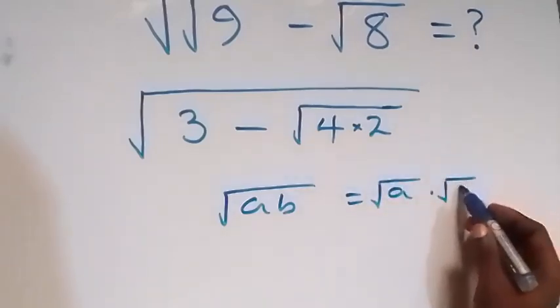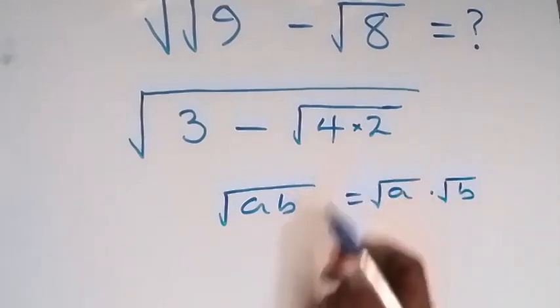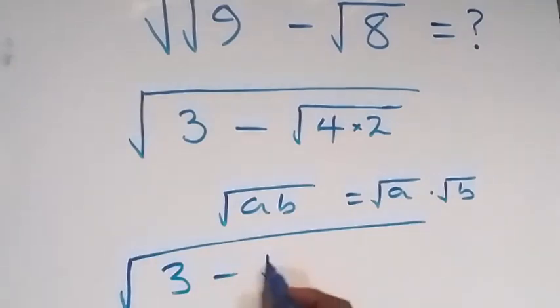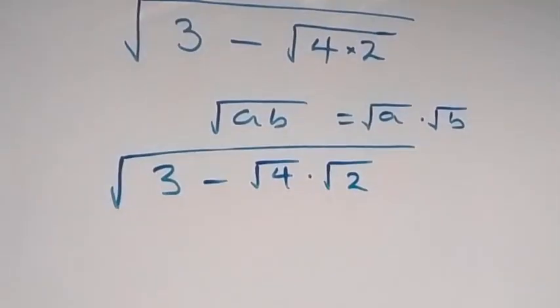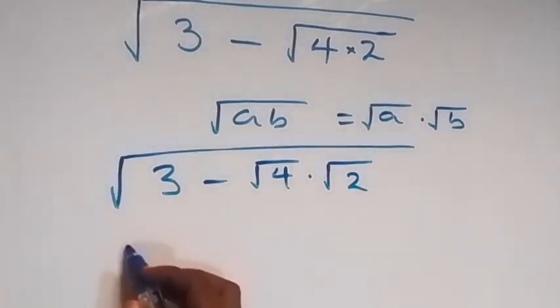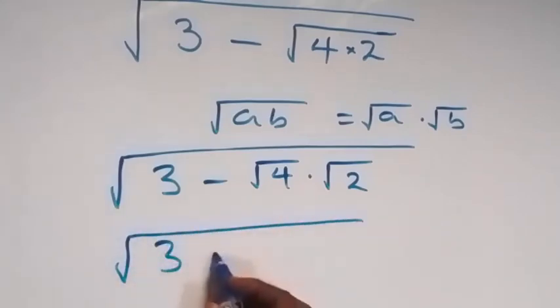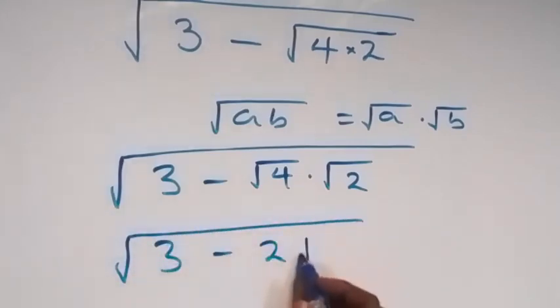times root b, and we can separate this. From here this becomes square root of 3 minus root 4 times root 2. From here, then here root 4 is 2, this becomes square root of 3 minus 2 root 2.